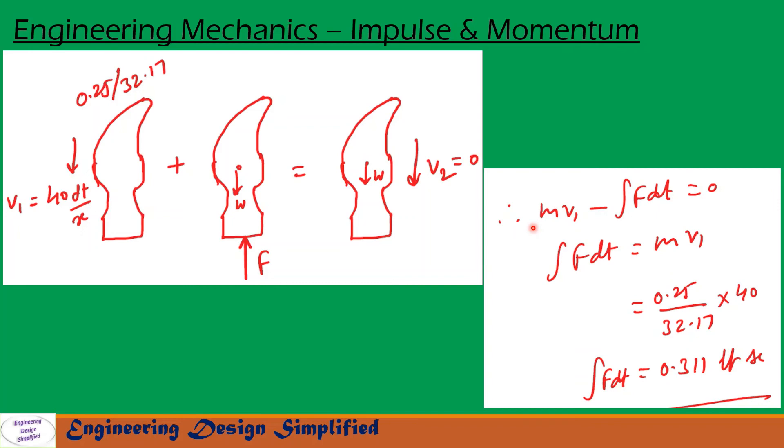In this impulse momentum equation, m is the mass of the hammer, v is the initial velocity of the hammer, F is the resistance by the nail, and dt is the time during which impact happens. So this equation can be written as integral of F dt equals m v1.